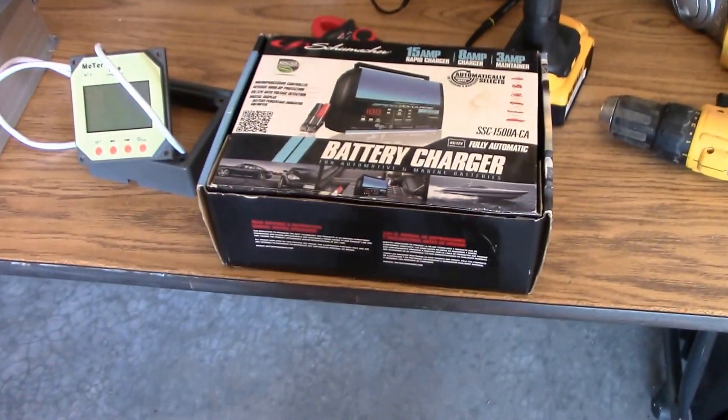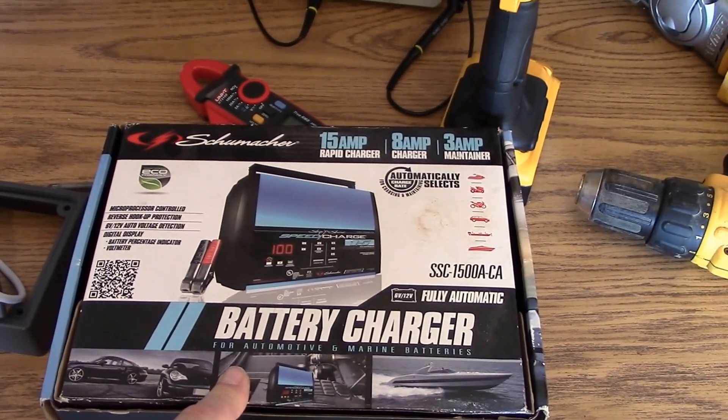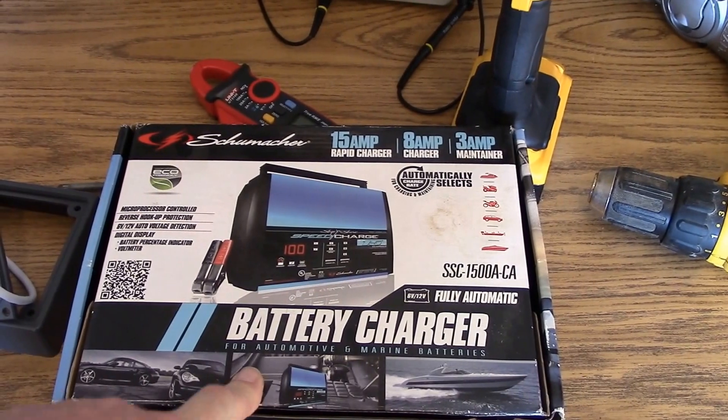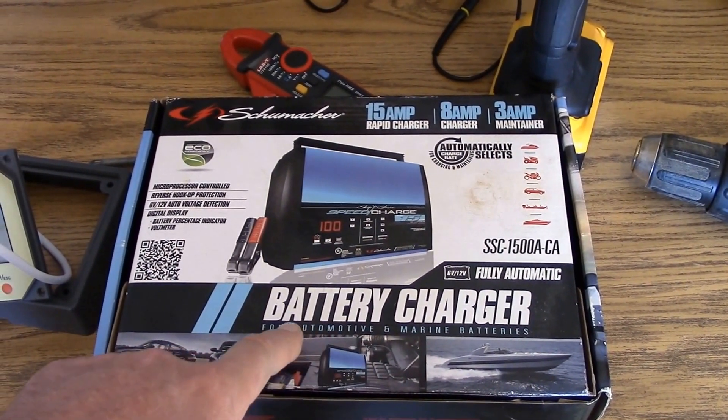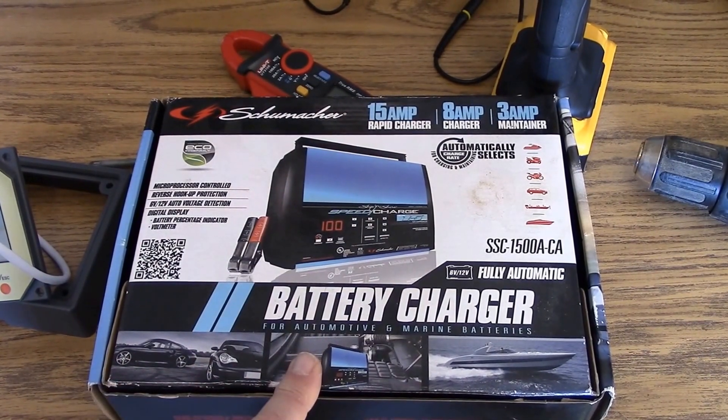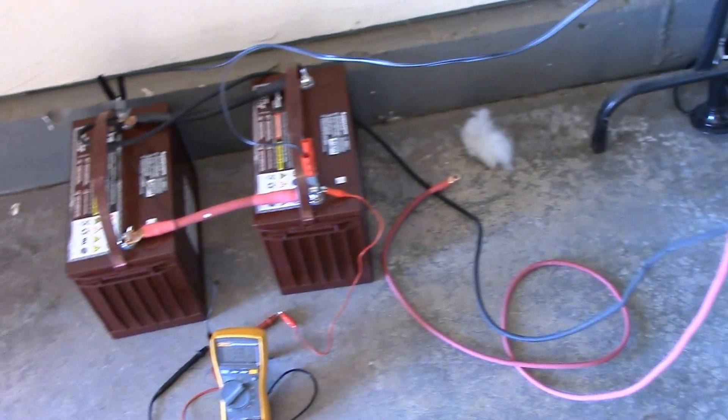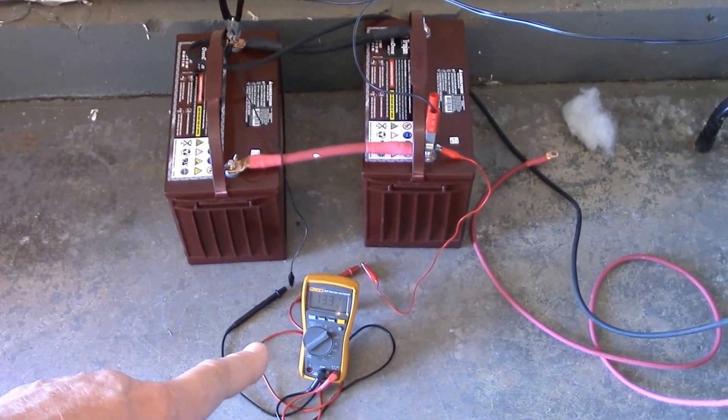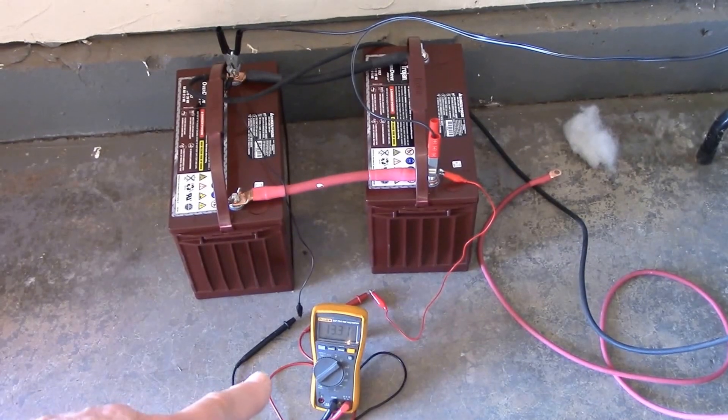I got this about four or five years ago, I think, maybe about three years ago. Anyway, it has an AGM button on here and I hooked it up and charged the batteries with it, checked it with the meter, and it got up to 15.4 volts, which was way too high.